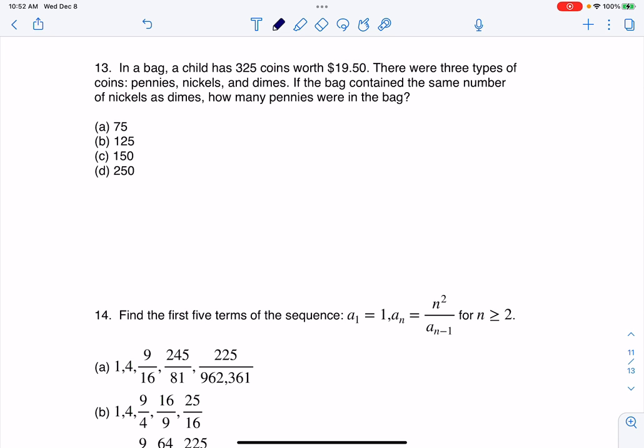There were three types of coins, so pennies, nickels, and dimes. That's part of why this is only $19.50. If the bag contained the same number of nickels as dimes, how many pennies were in the bag?